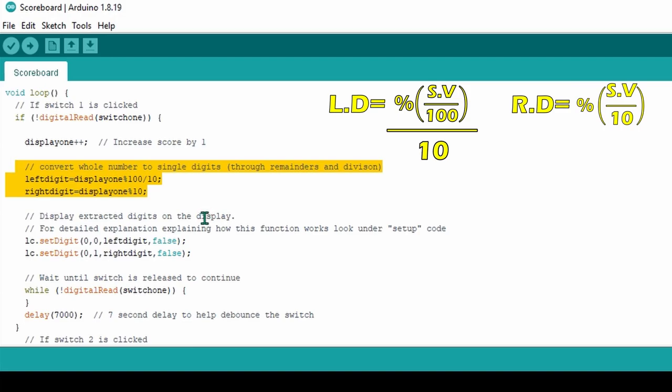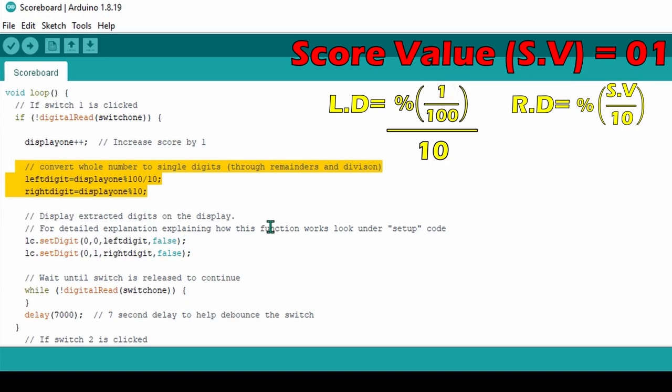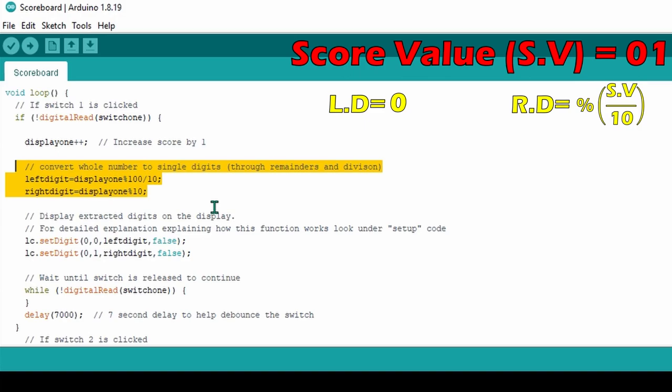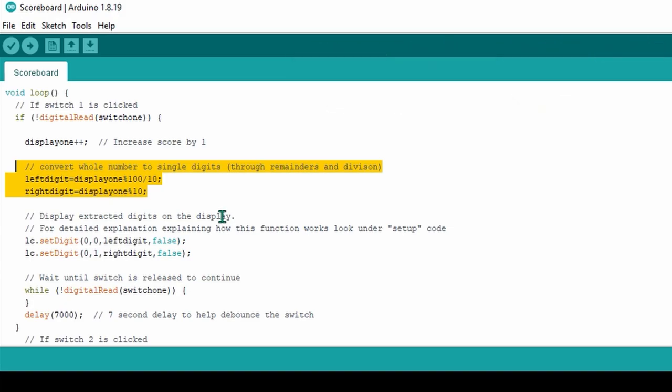Let's use two examples to clarify how the code is able to split the score into two digits. For example, let's say the score is 1. For left digit, 1 divided by 100 has a remainder of 1. Taking that remainder and dividing it by 10, 1 divided by 10 equals 0.1. As left digit has been defined as an integer and not a floating point, it does not save the decimal place and so left digit will equal 0. For right digit, 1 divided by 10 has a remainder of 1 and therefore right digit will equal 1. Therefore, this 7-segment display will show 0,1 which is correct.